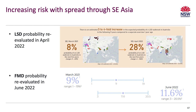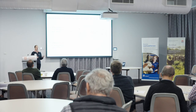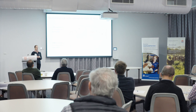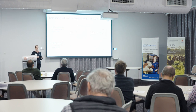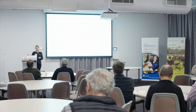Lumpy skin disease went from 8% to a 28% risk of incursion in the next five years. There was a lot of media attention around foot and mouth disease occurring in Indonesia, with people demanding that travellers returning from Bali give up their footwear. However, the actual risk of foot and mouth disease coming into Australia didn't increase that much — it went from 9% to 12%. The reason lumpy skin disease risk is higher is because it's vector-borne, rather than coming via contaminated meat products, which is the most likely route for a foot and mouth disease incursion.